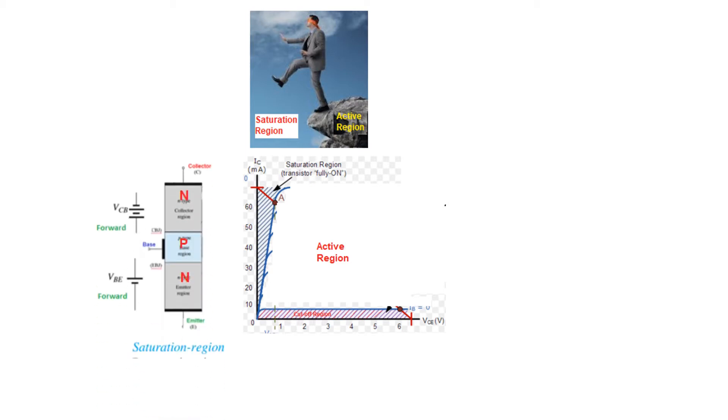And if you recall the two parameters that define the change: the base emitter junction is forward biased here and here. In case of an active region, the base collector is reverse biased. But in case of a saturation region, the base collector is forward biased.